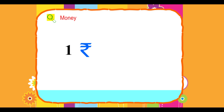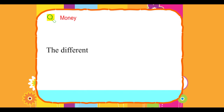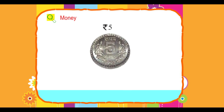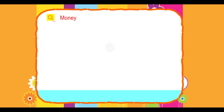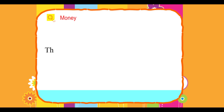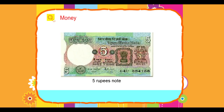One rupee equals hundred paisa. Physically, money is in notes and coins. There are different denominations of both notes and coins. The different denominations of coins are 5 rupee coin, 1 rupee coin, 2 rupee coin, and 50 paisa coin.